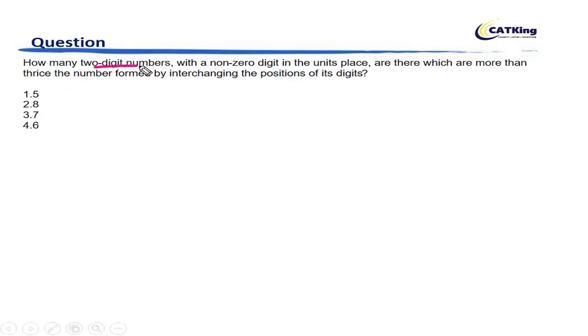The question is: How many two-digit numbers with a non-zero digit in the units place are there which are more than thrice the number formed by interchanging the position of its digits?